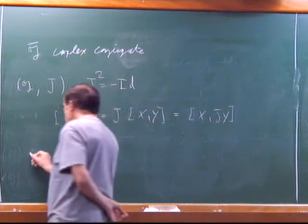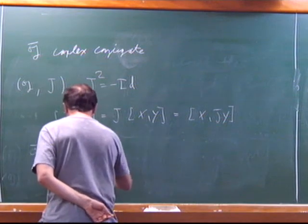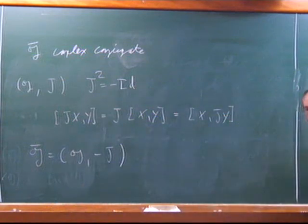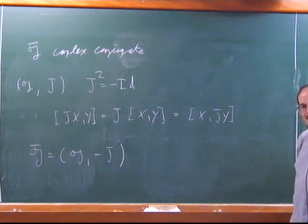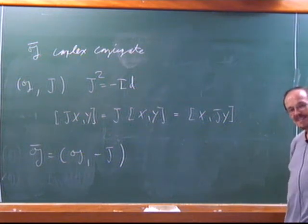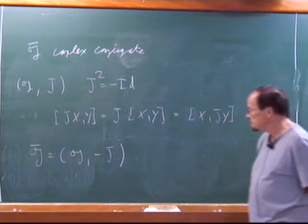So in this case, I can write down what G-bar is: G-bar is G with minus J. Just multiply the complex structure by minus one — that's another complex structure. You might think that G and G-bar must be the same Lie algebra — what am I doing, I just multiply I by minus one — but that's not true. G and G-bar may not be isomorphic.